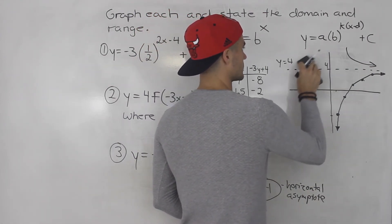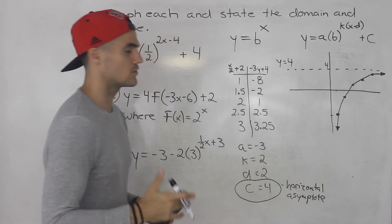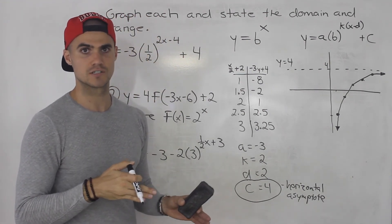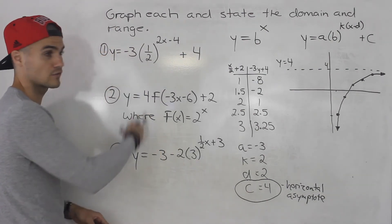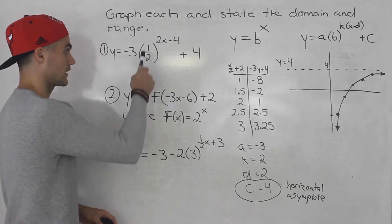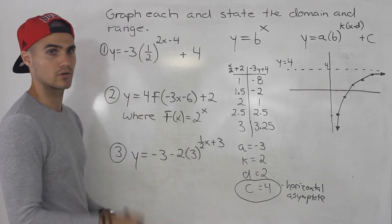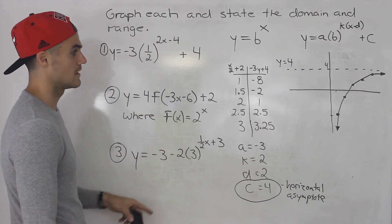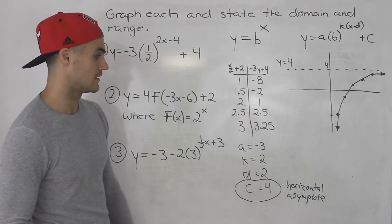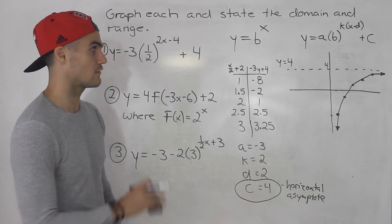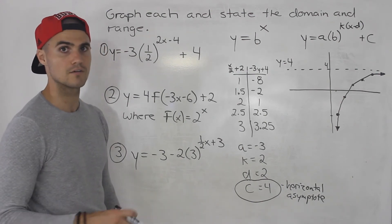This process is very similar to unit one, where we were transforming functions. The only difference is that the parent function changes depending on the base, so you have to make a new parent table each time. But the transformations are the same — you still use the x over k plus d, a·y plus c formula. The c value is always the horizontal asymptote; everything else remains the same.